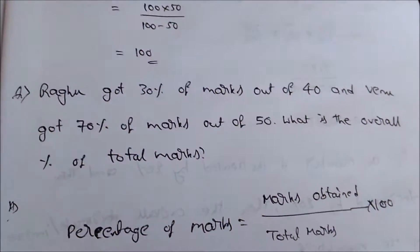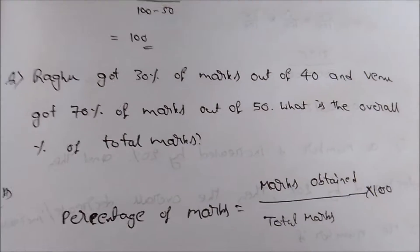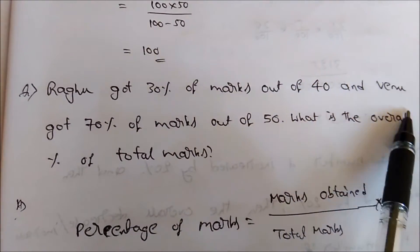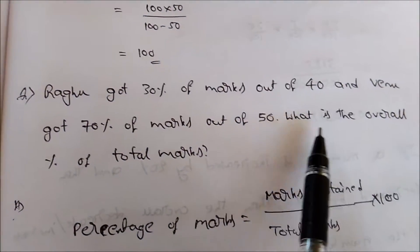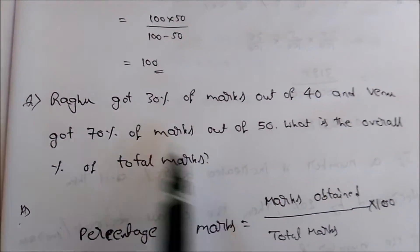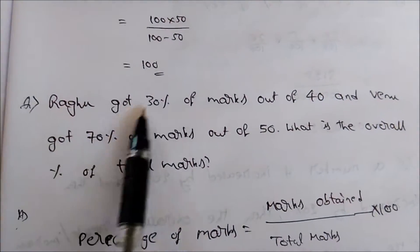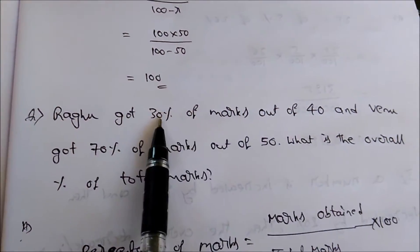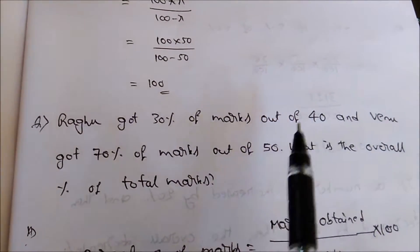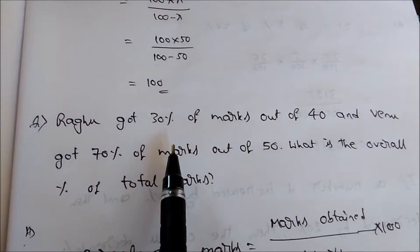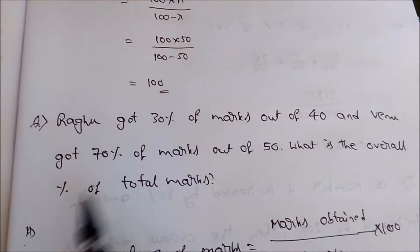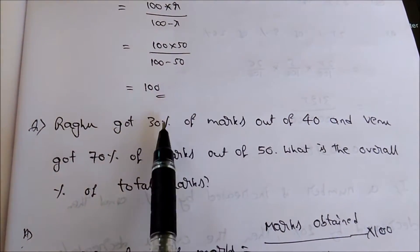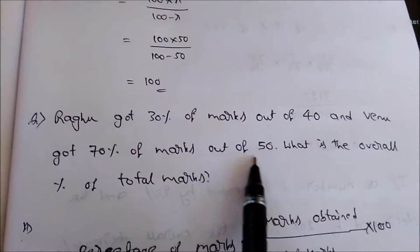Today I have taken a problem from the topic percentages. The question is: Raghu got 30% of marks out of 40, and Venu got 70% of marks out of 50. What is the overall percentage of total marks? Raghu has written an exam for 40 marks and got 30% of those marks. Similarly, Venu has written an exam for 50 marks and got 70% of those marks. The question asks: Raghu and Venu combined together, what is the percentage of marks they have obtained?